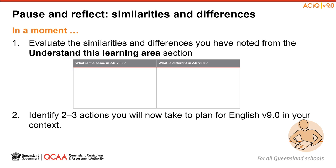Download and read through the new section on Key Considerations. Or organise time in your next year or school meeting to review the changes to strands and sub-strands in teams. Pause the session recording at this point to reflect on the notes you have taken throughout the session. Identify two or three actions you will now take to plan for English Version 9 in your context.